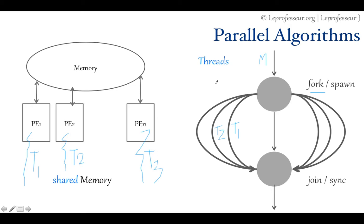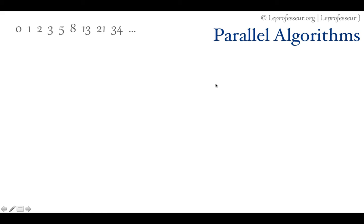Let's take an example of the Fibonacci sequence. The Fibonacci sequence is a very popular sequence where the next number is the sum of the previous two numbers. So two is the sum of zero and one, three is the sum of one and two, five is the sum of two and three.